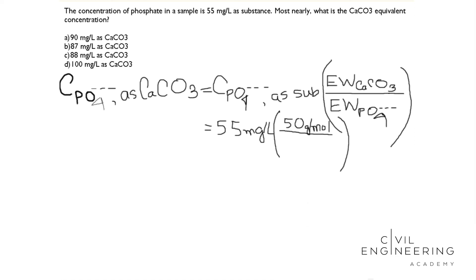First we need to know what equivalent weight is. Equivalent weight (EW) equals molecular weight (MW) divided by oxidation number.